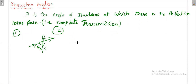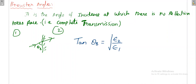In mathematics, that angle is denoted as tan theta B, where theta B denotes Brewster's Angle. That is equal to the square root of epsilon 2 divided by the square root of epsilon 1, or otherwise this can be written as n2 divided by n1. So tan theta B is equal to n2 divided by n1.